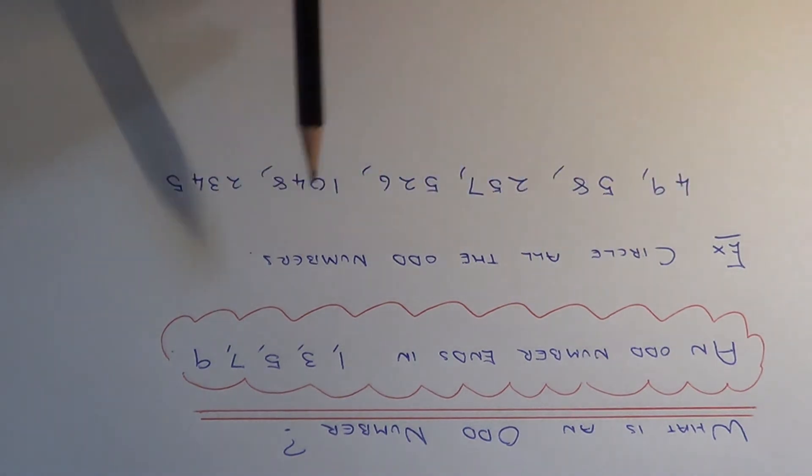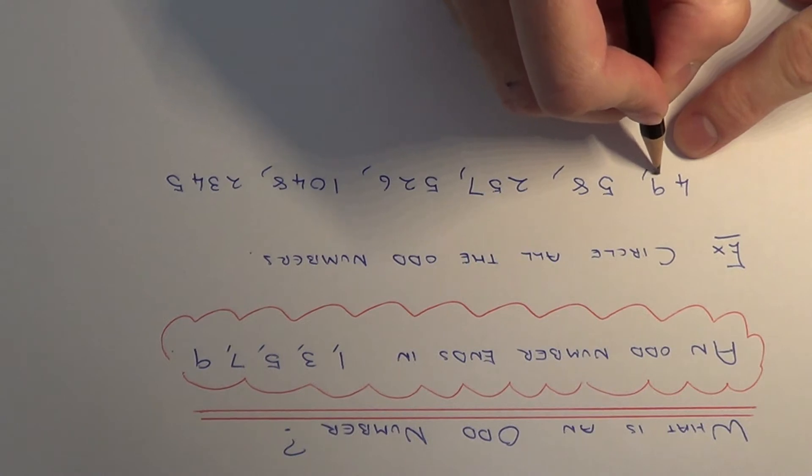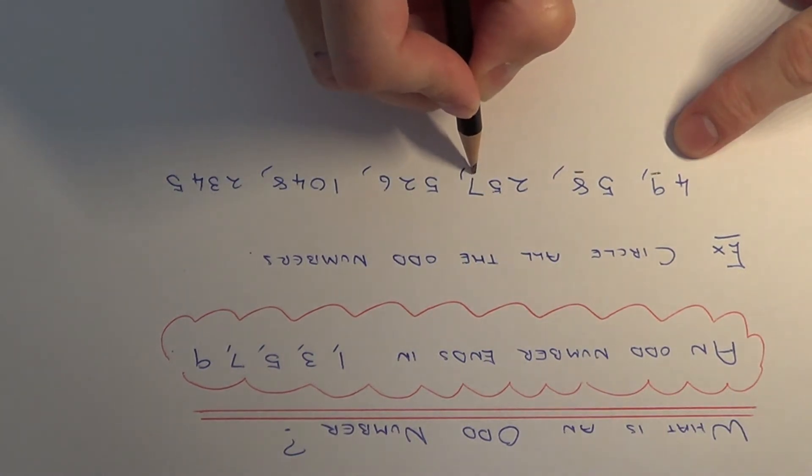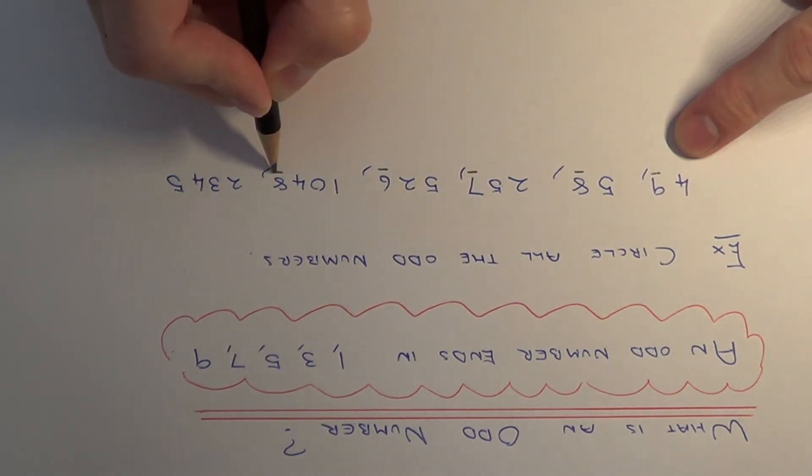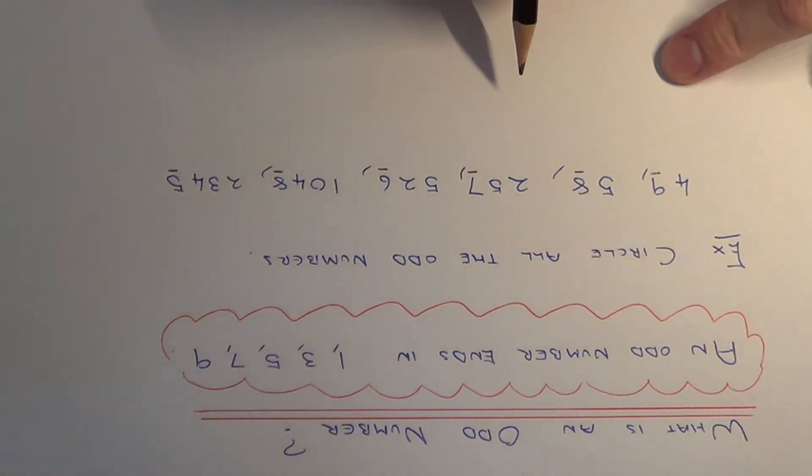So let's have a look at the example here. We've got to circle all the odd numbers. So we just need to look at the last digit of each number. The first one is 49, the next one is 58, 257, 526, 1048, and 2345.